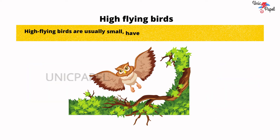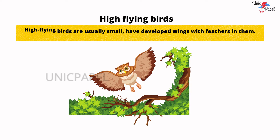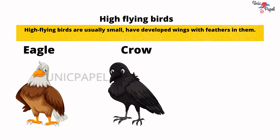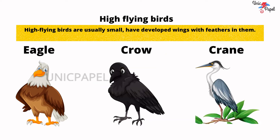High-flying birds are usually small, have well-developed wings with feathers. Example: eagle, crow, crane, and many more.